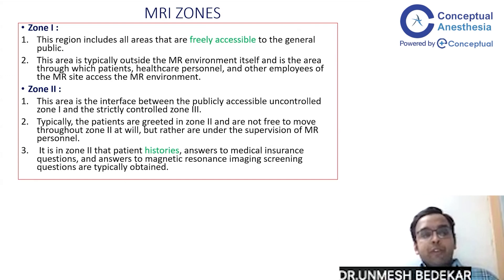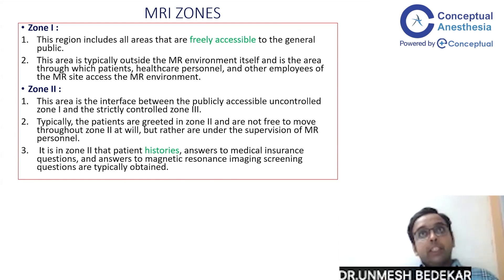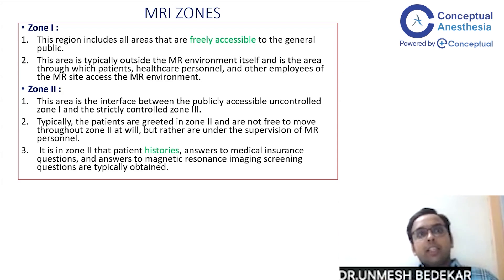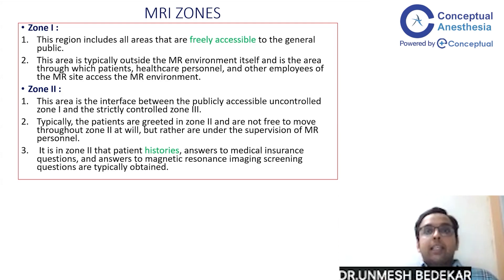Typically an MRI suite — as you may have noticed in your hospital — is situated on the ground floor. We will discuss why later. The MRI suite is divided into four zones for safety purposes. Zone 1 is the region that includes all areas freely accessible to the general public, outside the MR environment itself, through which patients, healthcare personnel, and other employees access the MR environment.